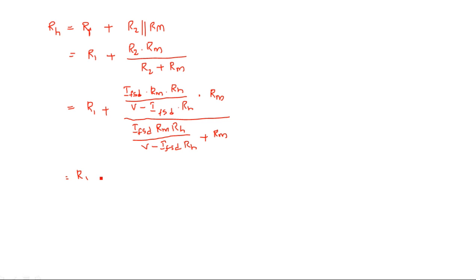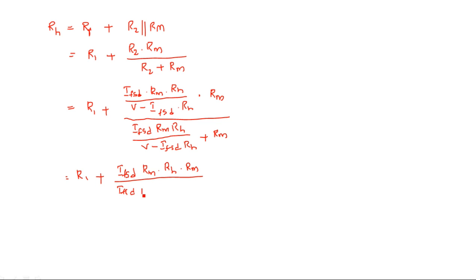That is equal to R1 plus. If you take LCM in the denominator, V minus IFSD here and V minus IFSD here, both get cancelled. So we get IFSD times RM times RH times RM, divided by IFSD times RM times RH plus RM times V minus IFSD times RH.